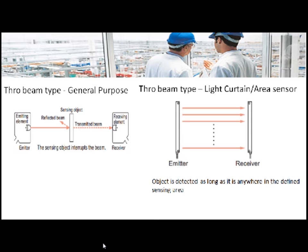Light curtains are mainly used for safety applications like furnaces or cutting machines. This sensor will stop the operation of the machine whenever an object or operator enters a danger area.